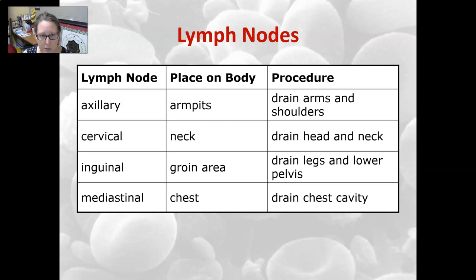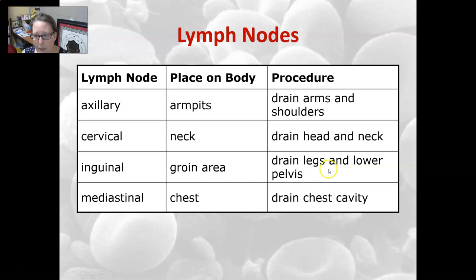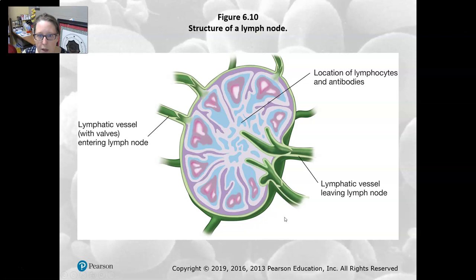The axillary lymph nodes are in the armpits and drain the arms and shoulders. The cervical lymph nodes are in the neck and drain the head and neck — these may swell with strep throat or pharyngitis. The inguinal lymph nodes are in the groin and drain the legs and lower pelvis. The mediastinal lymph nodes are in the chest and drain the chest cavity. There is also lymphatic tissue around the digestive organs.